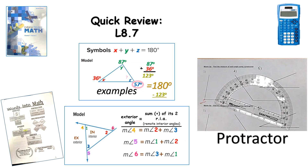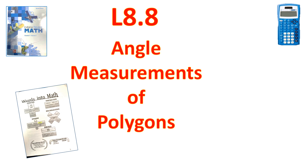Now we're going to get into lesson 8.8, where we'll be looking at the measurements of polygons — that's interior angles and exterior angles. There's a formula for us to learn for the interior angles. Most of geometry is about: here's a formula, write it on your paper, and then plug in the information that you know. If you start by writing the formula on your paper and then plugging in what you know, the math becomes much easier because you can see it.